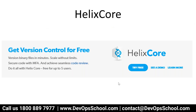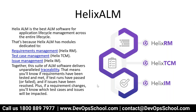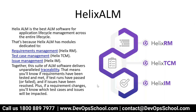Helix Core lets you version files at massive scale without limits, secure code with MFA, and achieve seamless code review. It's free for up to five users. Helix ALM is a good application lifecycle management tool that provides end-to-end traceability across your lifecycle. ALM management is divided into three parts: Helix RM for requirements management, Helix TCM for test case management, and Helix IM for issue management.